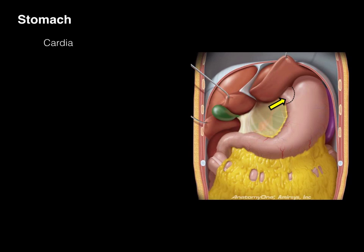We'll start with the cardia. The cardia is the portion that is adjacent to where the esophagus enters into the stomach. It has some specific cardiac glands, and it's named cardia because it's closest to the heart.